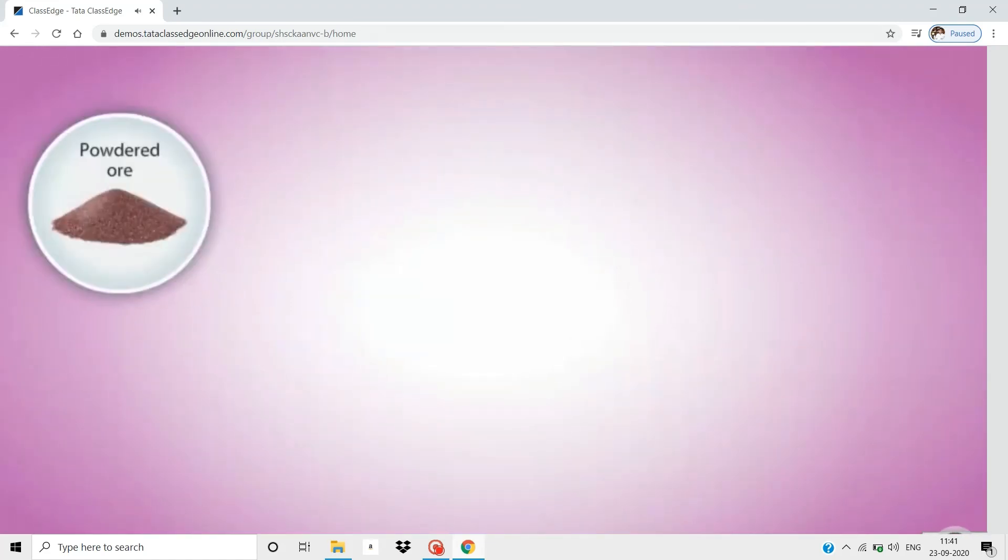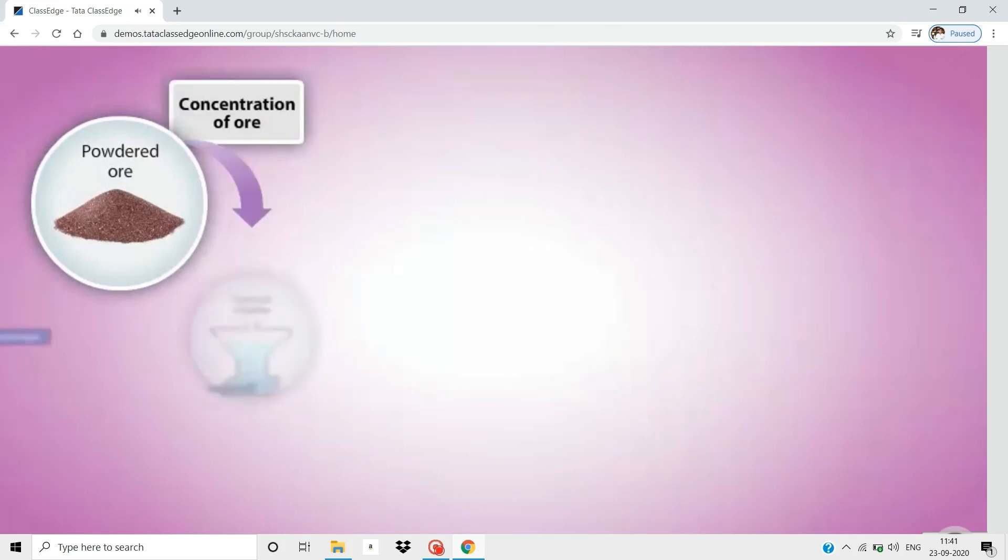Let's quickly recapitulate the steps in the extraction of iron. The powdered ore is concentrated in a hydraulic classifier. Here, the lighter impurities from the ore are removed.